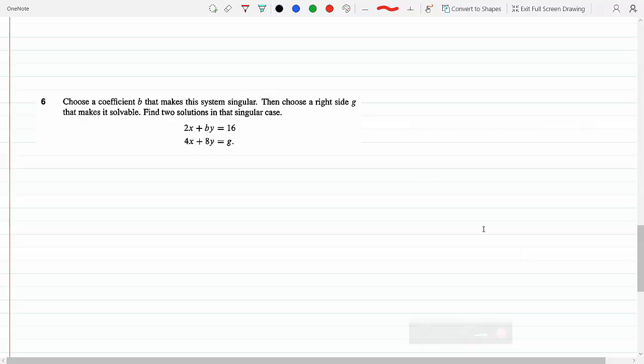Choose a coefficient B that makes this system singular. A singular matrix is a matrix that does not have an inverse. If the matrix does not have an inverse, that means the determinant of the matrix has to be zero, and from that I can find what B is.